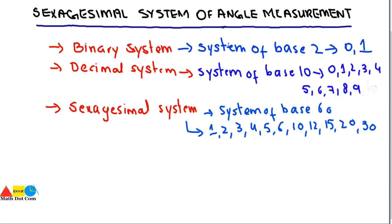If you carefully notice these numbers, all of them are actually factors of 60. This was the property due to which they used this system as a base-60 system, as 60 can easily be divided by all these numbers. So because of this divisibility property of 60, the system was given the name of the system of base 60.